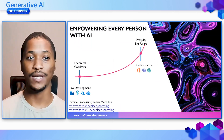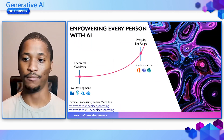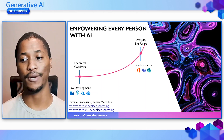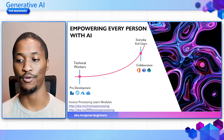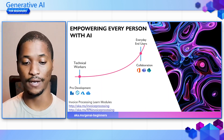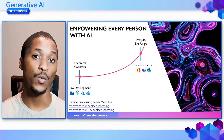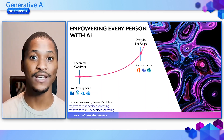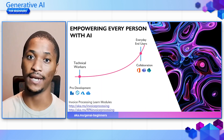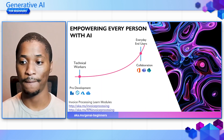We can empower every person with AI because AI is no longer a niche capability for pro developers and data scientists, which we can provide through Azure. AI is an imperative and expected offering in our day-to-day productivity. You can think about PowerPoint Designer, for example, where when you're working on slide presentations, you may get suggestions for how your design would look for a specific slide on your deck.